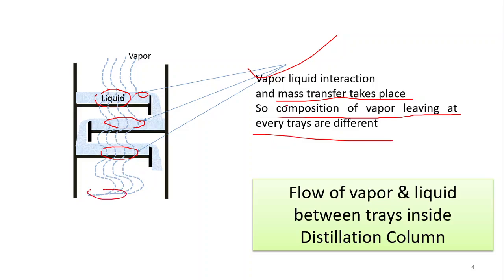The composition of vapor leaving each tray is different from the vapor entering it. Each tray has a different vapor composition because the vapor is interacting with liquid and mass transfer is taking place. That is why trays are necessary in the distillation column — liquid and vapor mix together, mass transfer takes place, equilibrium is established, and vapor-liquid equilibrium data is generated on these trays.